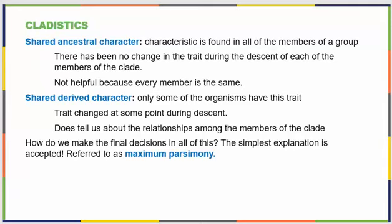As we consider all of these different character states and traits, how do we make a final decision? We go for the simplest explanation — it's called maximum parsimony. We try to group things so that the least amount of evolutionary change had to happen, because evolutionary change can take a lot of time and major events. So we shoot for the simplest explanation, and as with most things in life, that's usually the one that's true.